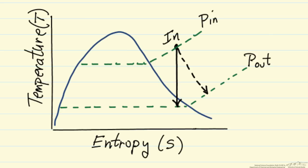As we move through the turbine, the temperature decreases because we are removing energy in the form of work from the steam, and the entropy increases. This is an irreversible process. So this point here is the outlet condition.